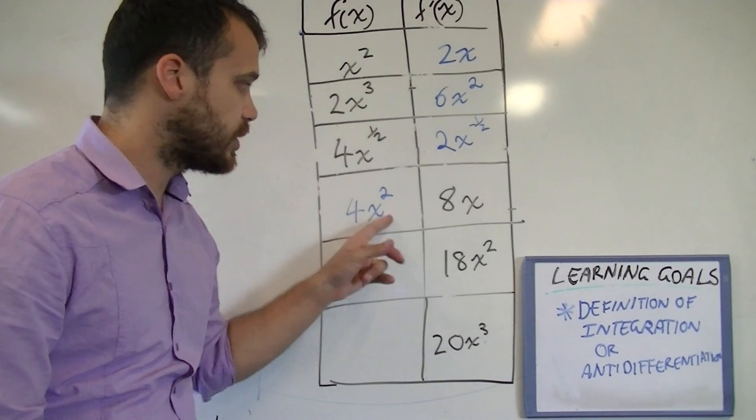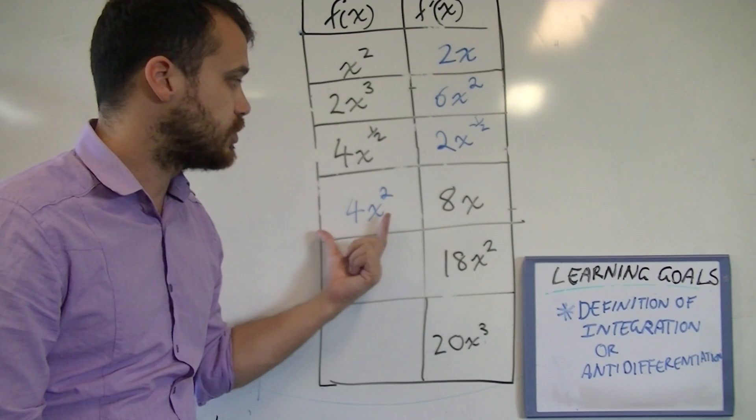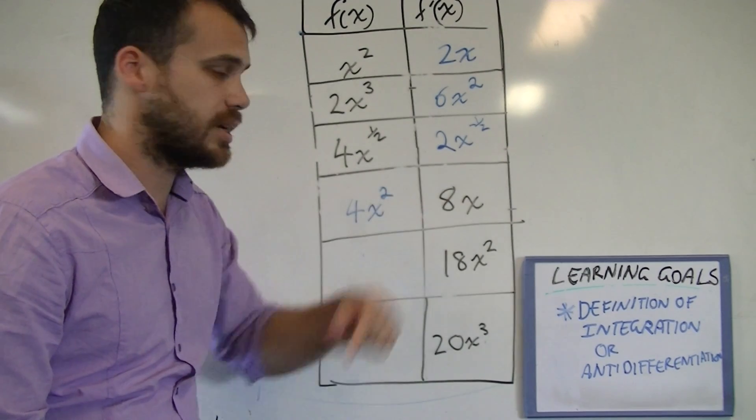Now you can check it, 4x squared. Most of us are going to be better at finding the derivative than we are at finding the integral. So the derivative of 4x squared is 4 times 2, which is 8. 8x.